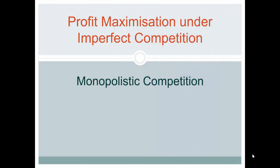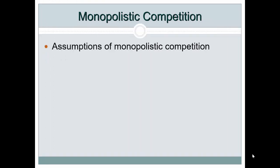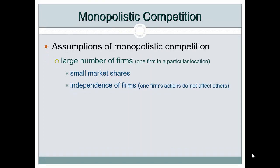This is a screencast on monopolistic competition. Let's look at the assumptions. There will be a large number of firms in this type of market or industry, but one firm in a particular location. Think of a town and a hairdresser there, or an Italian or Turkish restaurant — these are basically in monopolistic competition with each other.